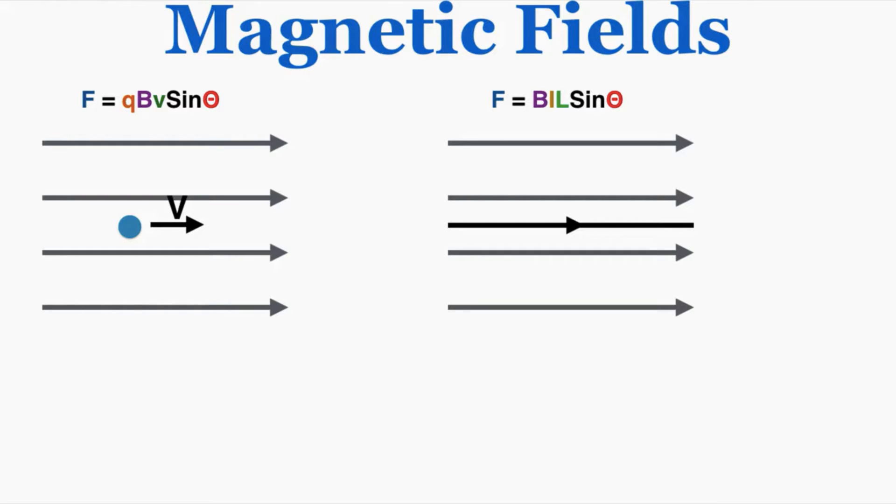That means the angle between the velocity and the field, and between the current and the field, is actually zero. They're parallel to each other, so there's no angle separating them. If the angle is zero, sine of zero is zero. So if these things are parallel to the magnetic field, there is zero force coming from the magnetic field on those objects.